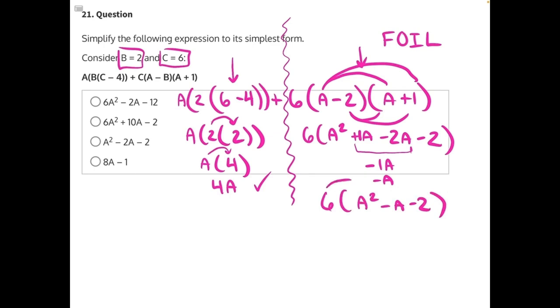And then we can distribute the 6 into the parentheses. 6 times A squared is 6A squared. 6 times negative A would be minus 6A. And then 6 times negative 2 would give us negative 12.